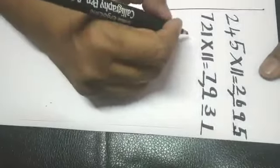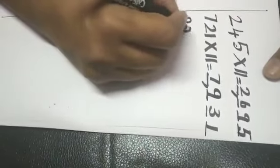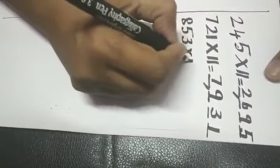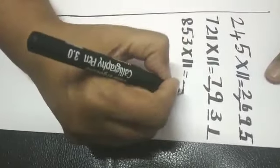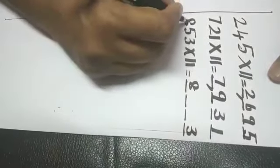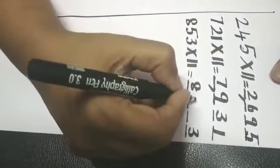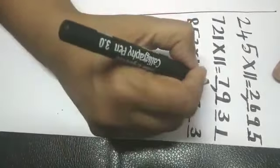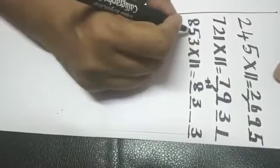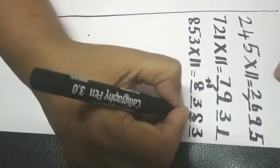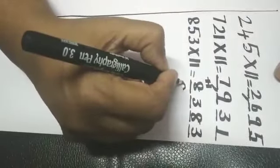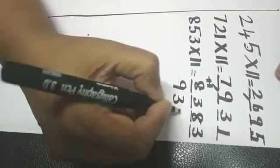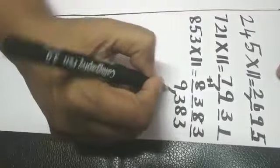Next, eight hundred and fifty-three multiplied by eleven. Draw four blanks: first number eight, last number three. Eight plus five is thirteen — more than nine, so write three and carry one. Five plus three is eight, then eight plus one carry gives nine. The answer is nine thousand three hundred and eighty-three.